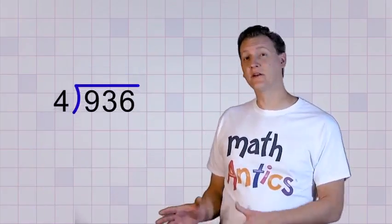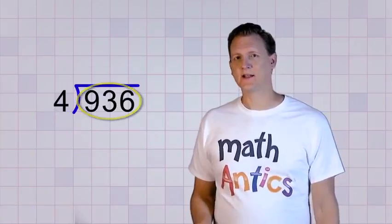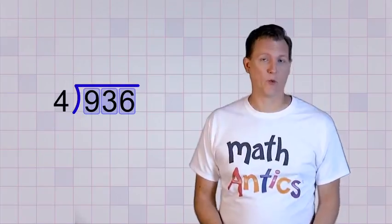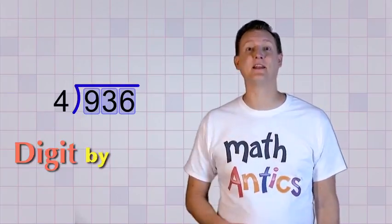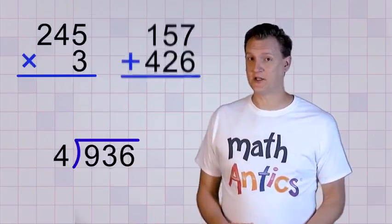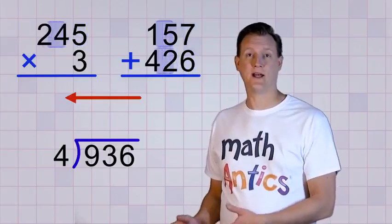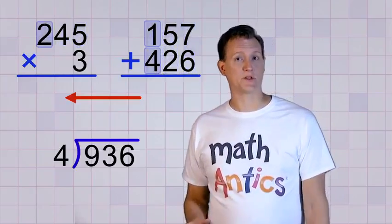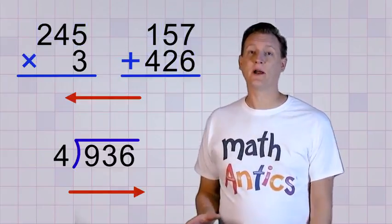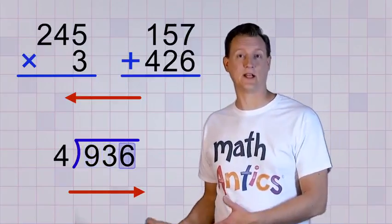Well, instead of trying to divide the entire 936 by 4 all at once, let's break this problem up into smaller steps by just trying to divide each digit by 4, 1 digit at a time, digit by digit. Do you remember how with multi-digit multiplication and addition, we always start with the smallest digit, the ones place digit, and we work from right to left? Well, division is backwards. We still go digit by digit, but the other way. We start by trying to divide up the digit in the biggest number place first, and we work our way from left to right.